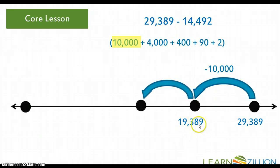The next number that I'm going to subtract is 4,000. So I know that 19,389 minus 4,000 is 15,389. The next number I'm going to be subtracting is 400. And so I know that 15,389 minus 400 is 14,989.